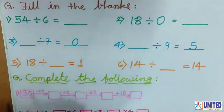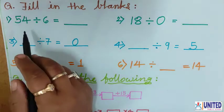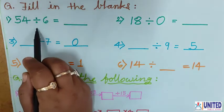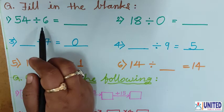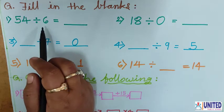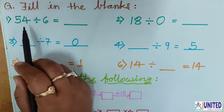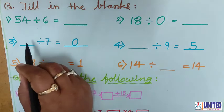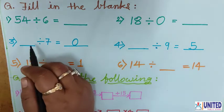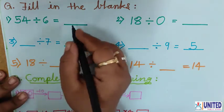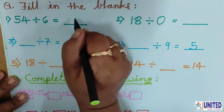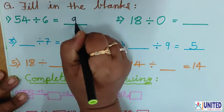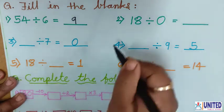Fill in the blanks. Here some fill-in-the-blanks are given. So let's see. 54 divided by 6 — you have to speak out the 6 times table until 54 comes. So, 6 nines are 54. The answer is 9.